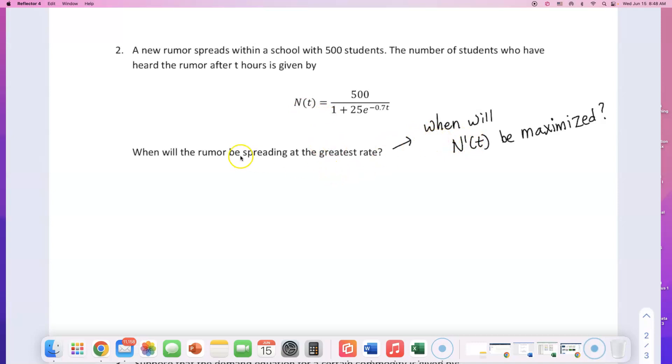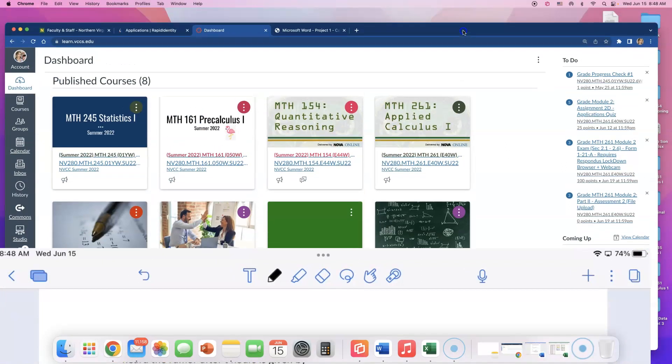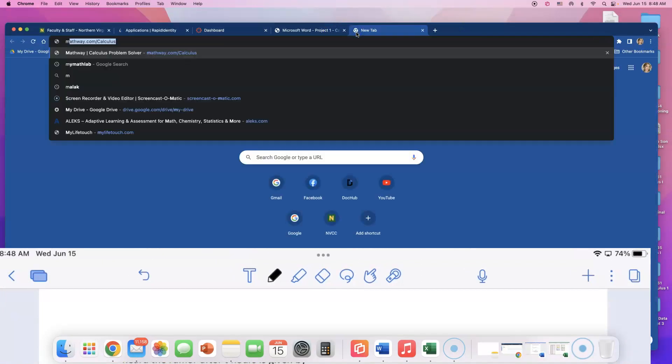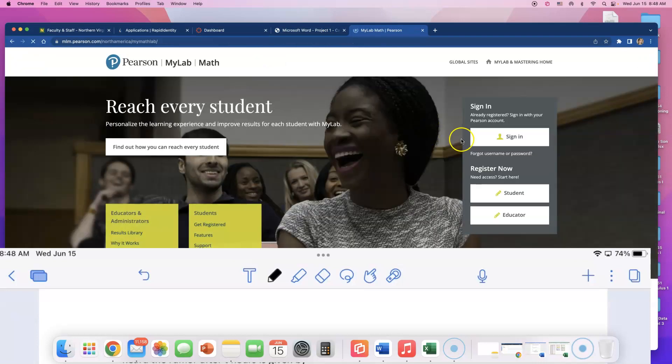Like when will the spreading be at the greatest rate? If you were to do this in a long way, you will have to find the first derivative and the second derivative, find a point of inflection. But I do want to point you to a section in the textbook. There's a formula that will make this very easy for you.